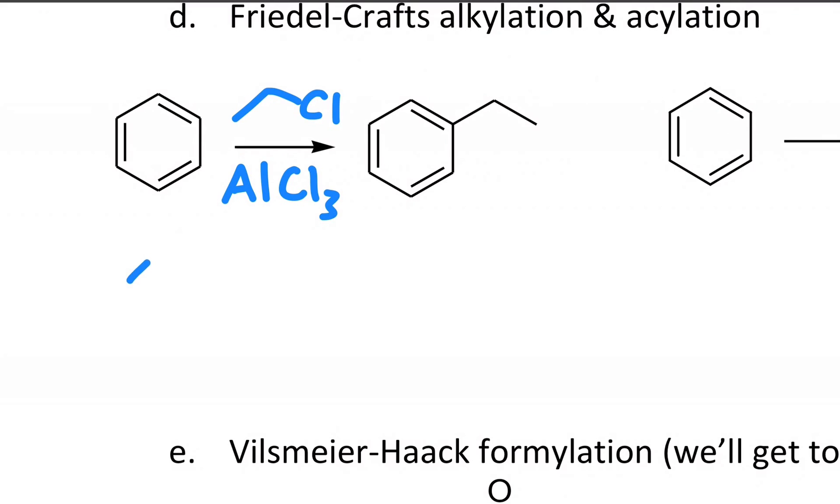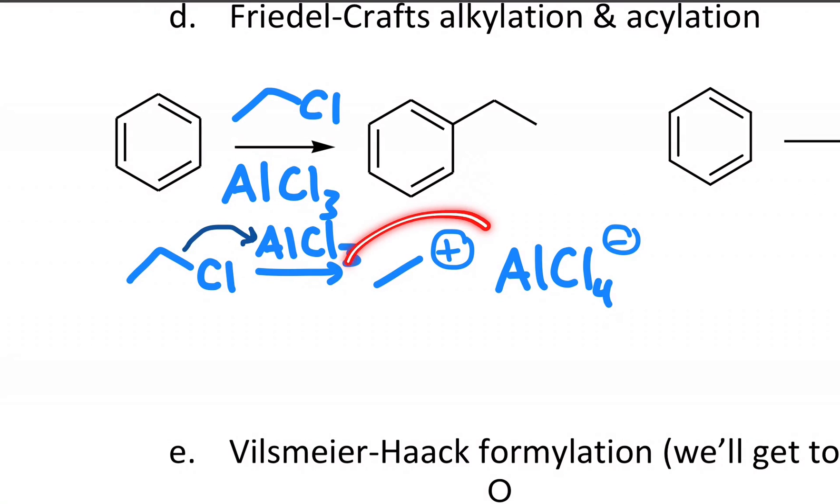Similarly to what we've seen so far, the first thing is the reagents combine and you'll get almost a naked carbocation along with the complex ion that forms from the Lewis acid. That's just from the chloride being stripped off by the aluminum in this case. Now I have this active electrophile and that's what benzene sees.